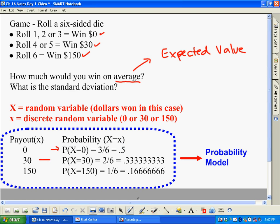Same thing over here. The chance of getting $30, the payout of $30, is 2/6, and the chance of getting a payout of $150 is 1/6.